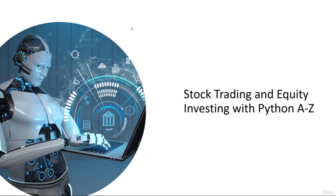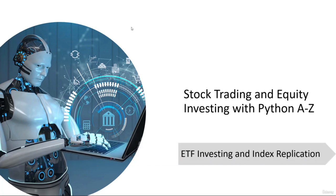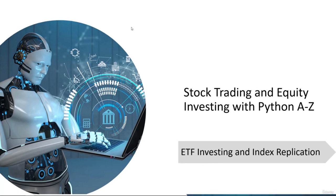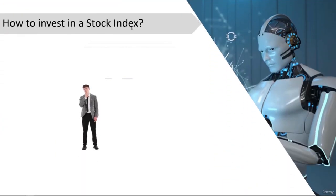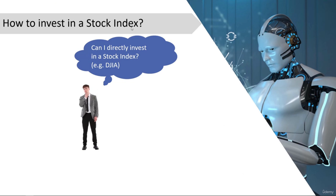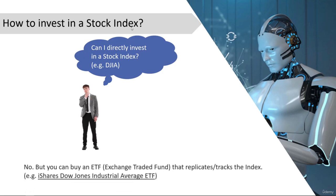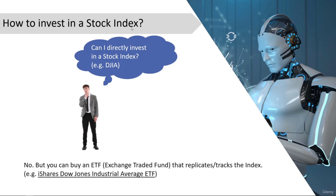In the last section we learned how to build a stock index. The question now is: how can investors benefit from stock indexes? This leads us to ETF investing and index replication. Some may ask whether you can directly invest in a stock index like the Dow Jones Industrial Average. The answer is no, but you can buy an ETF (exchange-traded fund) that replicates or tracks the index — for example, the iShares Dow Jones Industrial Average ETF.